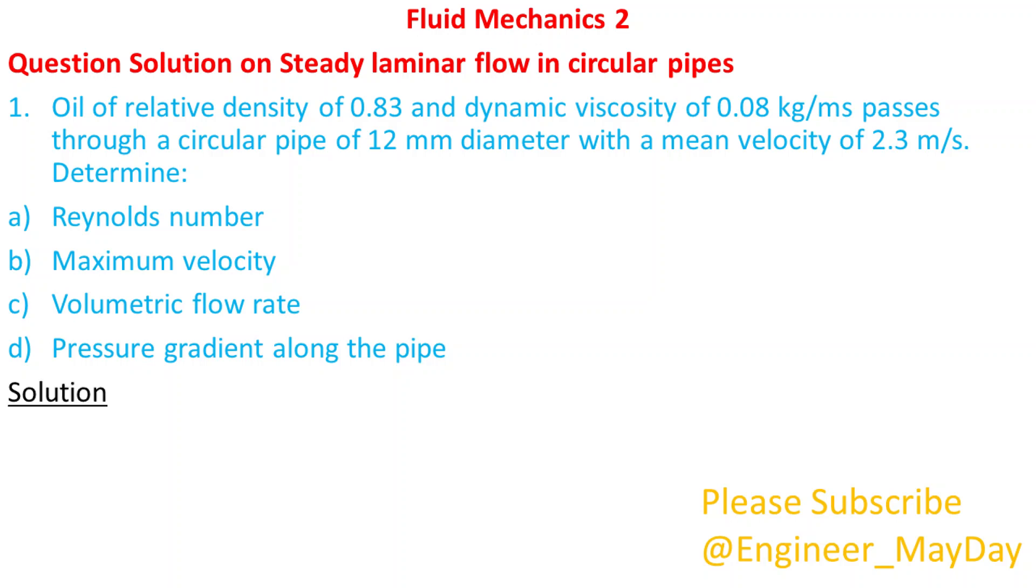Solution. Reynolds number is equal to rho multiplied by U multiplied by L divided by mu. Where rho is the density of the fluid, U is the velocity of the fluid, L is the characteristic length and mu is the dynamic viscosity.